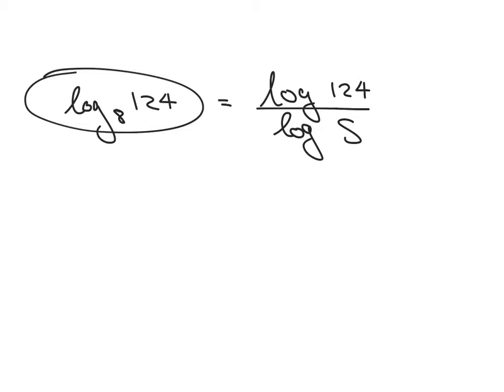Let's use an example here. Let's say that we have the log with a base 8 of 124. What this means is what number can I put on 8 that will give me 124. But my calculator won't do that. I can't put in log base 8. So, I need to change it to log base 10 or log base E. Really easy to do. All you do to change it to base 10 is we take log of the big number over log of the little number. That is it.